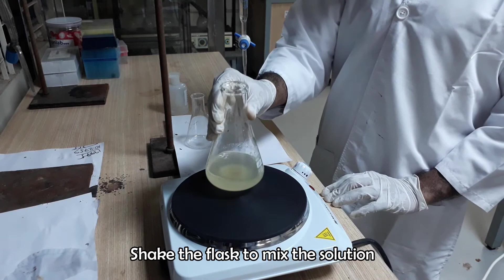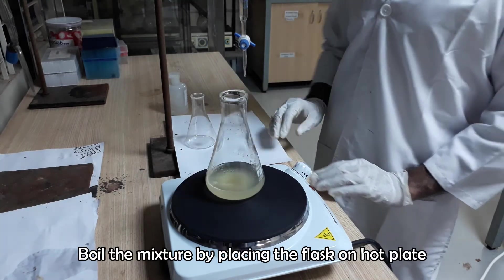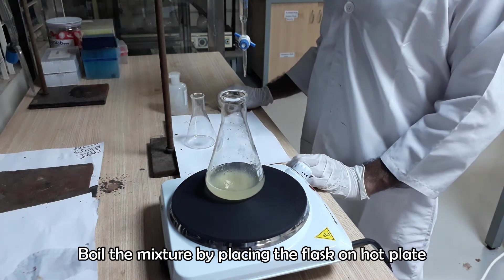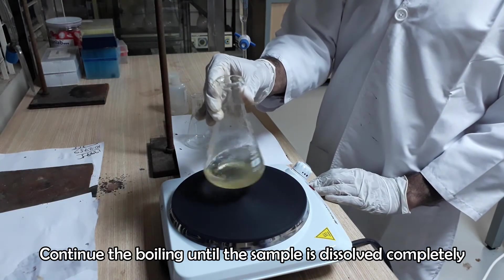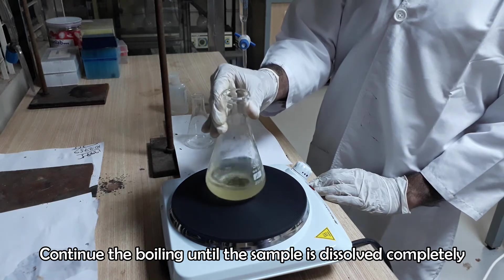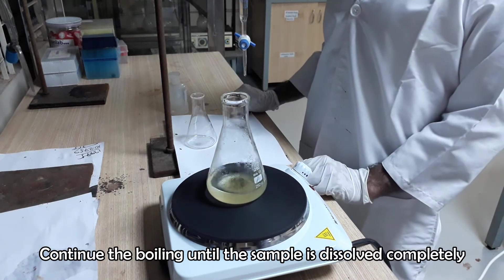Heat and boil the solution until the sample is dissolved in the ethanol completely. Shake the flask periodically to facilitate the rapid dissolving of the sample in ethanol.